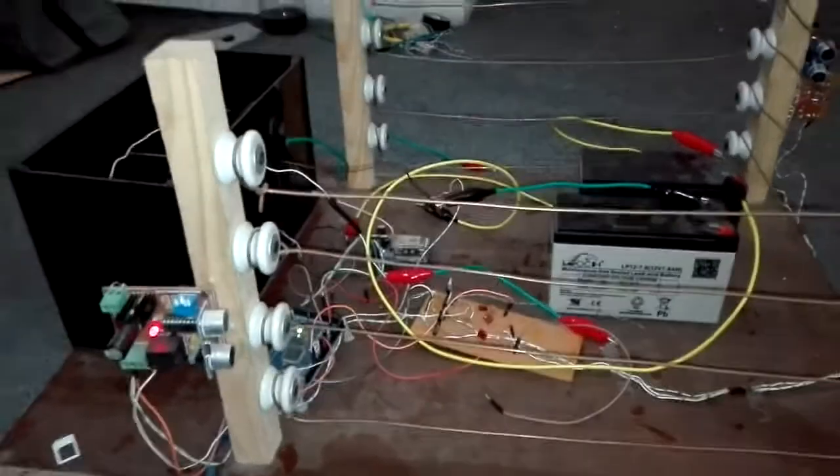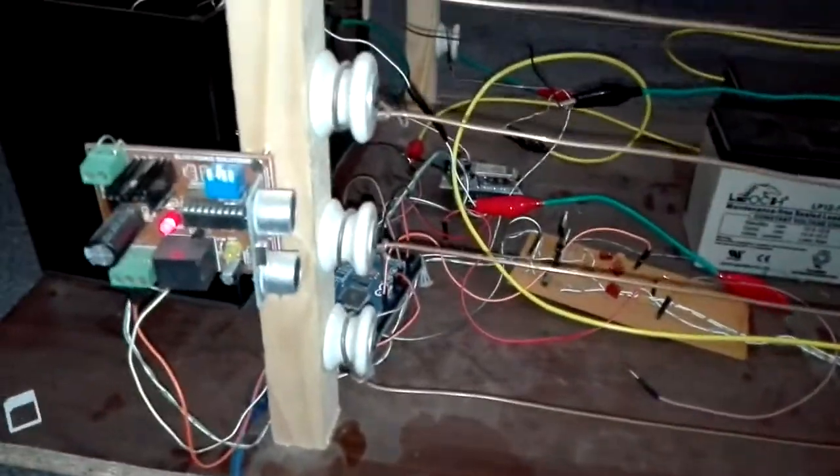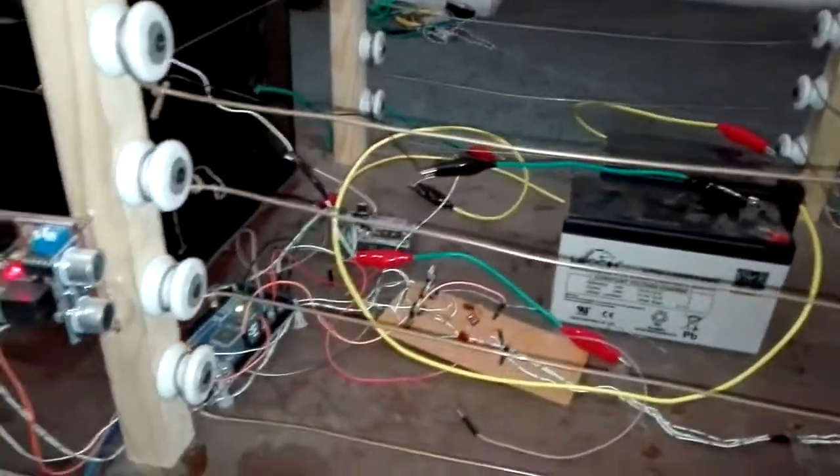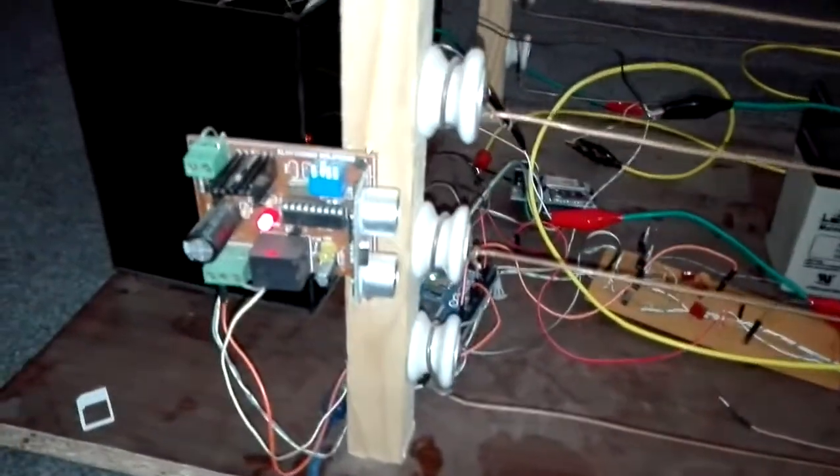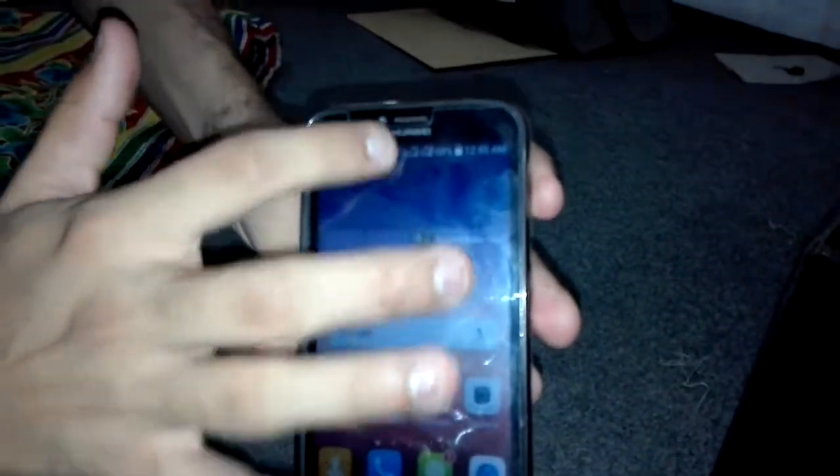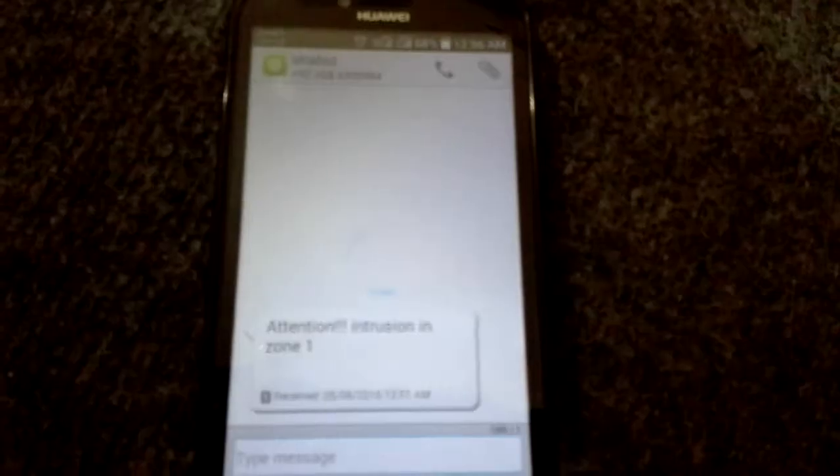Now you can see the way in which our detection system will operate. This is zone one of our electric fence and this is the sensor we have used for it. For example, intrusion happens in this area. The sensor will detect this and the GSM module will send a message to the owner. This is the message received. The message contains information about zone one.